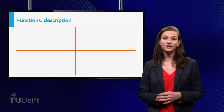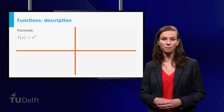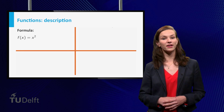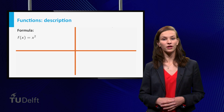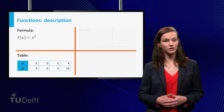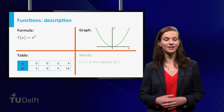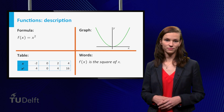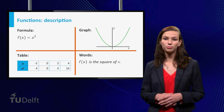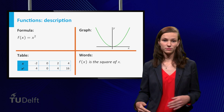We've seen four ways to describe a function: by means of a formula, using a table, using a graph, and in words. It's important that you can switch between these types of descriptions.